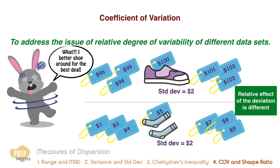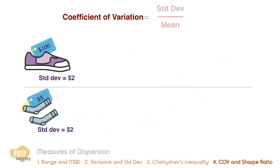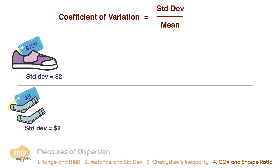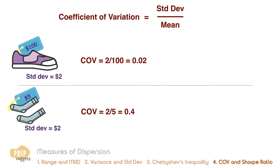To resolve this, a relative measure of dispersion like the coefficient of variation can be helpful. This is a measure of the deviation per unit of mean and is calculated by dividing the standard deviation by the mean. Calculating the coefficient of variation for each product, we get a value of 0.02 for shoes and 0.4 for socks. This implies that the relative variation of the price of socks is higher.